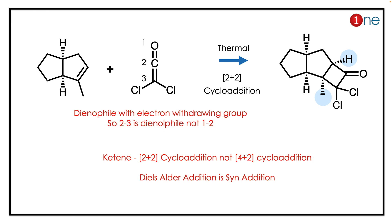The answer lies in the [2+2] cycloaddition. It is a kind of Diels-Alder reaction under thermal conditions. The dienophile here is not the diene but the ketene. The ketene will undergo [2+2] cycloaddition. This [2+2] cycloaddition is a syn addition, so you have to draw both carbons in the plane.